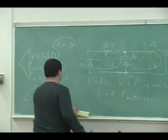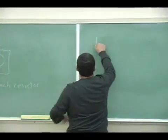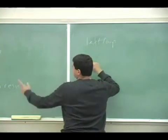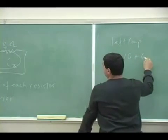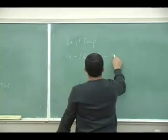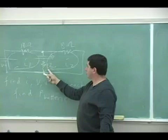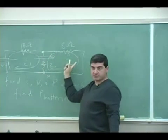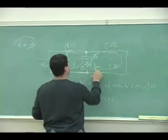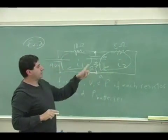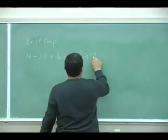And then you do the left loop. You go 9 minus 10 plus 6 minus 12I1. You're going like this, minus 12I1. But since you're going against I2, I2 is going up. So you go 9 minus 10 plus 6 minus 12I1 plus 12I2. Equals 0.